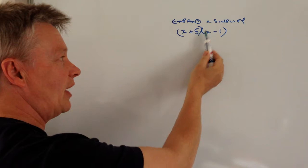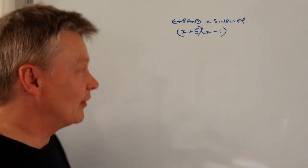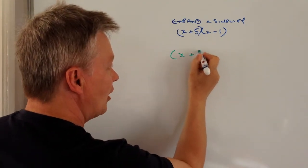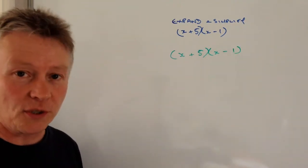We're looking at two bracketed terms and we want to expand and simplify them. If we look at the first term, we've got X plus 5, and we're going to multiply it by X minus 1.